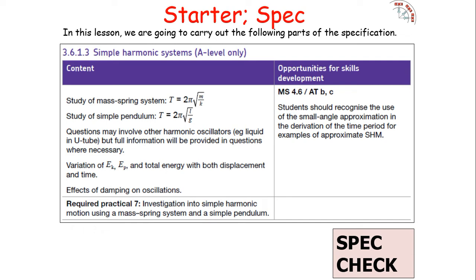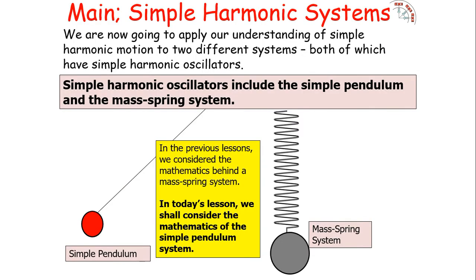We're going to be looking at a simple pendulum which links into the simple harmonic system, part of the periodic motion and further mechanics aspect of the AQA A-level physics found on paper 1 of the A-level physics but not on the AS physics course. In our previous lesson we considered the mathematics behind simple harmonic motion for a mass-spring system; today we look at another simple harmonic oscillator called the simple pendulum.